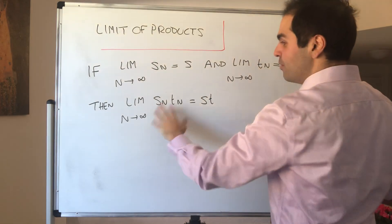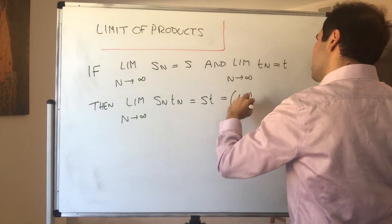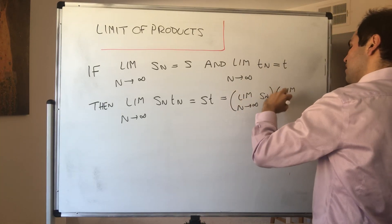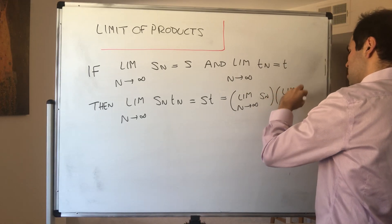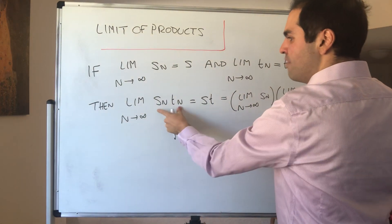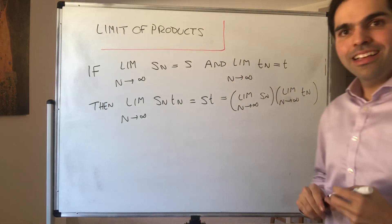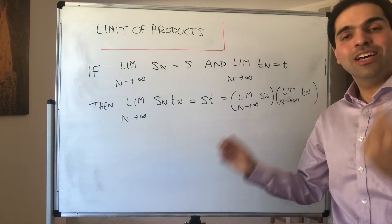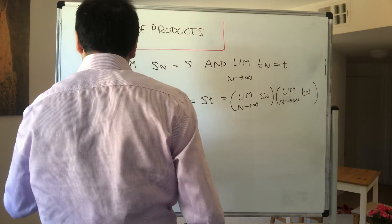Not only that, what's nice is remember S is the limit of Sn and T is the limit of Tn. In other words, what we want to show is that the limit of Sn Tn, so the limit of the product, is just the product of the limits. And what's nice about this is that not only is the result very nice, but I also absolutely love the proof. Let me share it with you.